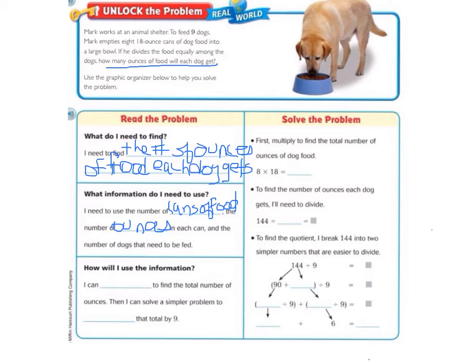And finally, under the read the problem, it asks us how will I use this information? And we are going to multiply to find the total number of ounces. And then we will solve the simpler problem to divide the total by nine.